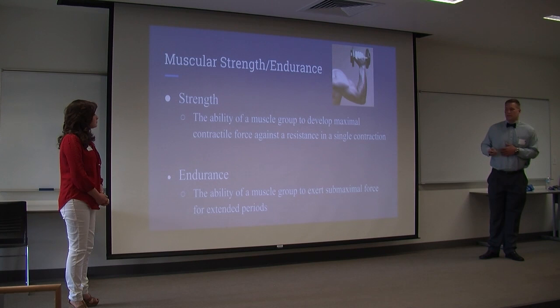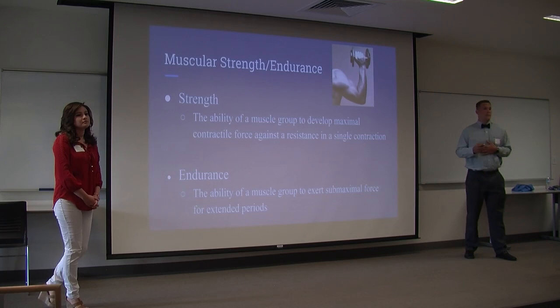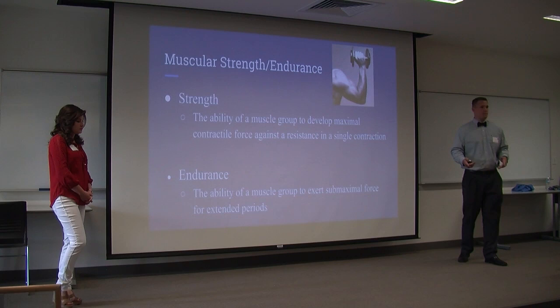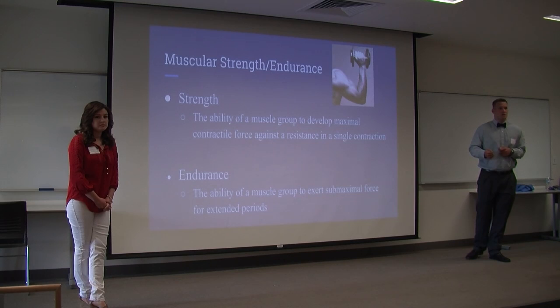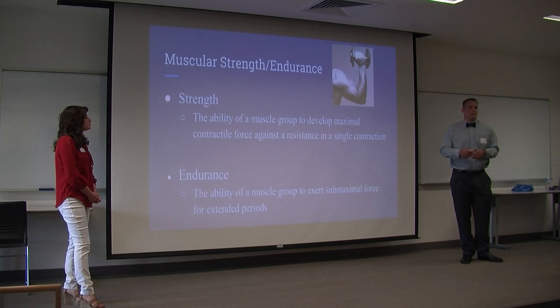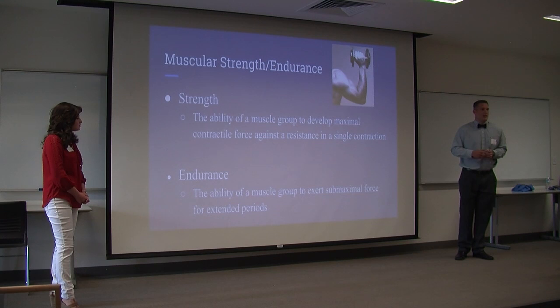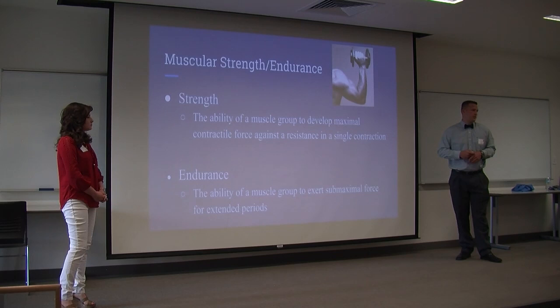Finally, we looked at muscular strength and endurance. Strength — which we didn't test in the Fitness Age test — is the ability of a muscle group to develop maximal contractile force for a single repetition, like a one-rep max. Endurance, which we did test, is the ability of a muscle group to develop sub-maximal contraction for elongated periods. We tested it through as many push-ups as you can do at the same pace, and as many sit-ups as you can do in one minute. Any exercise over about 14 repetitions qualifies as an endurance exercise.